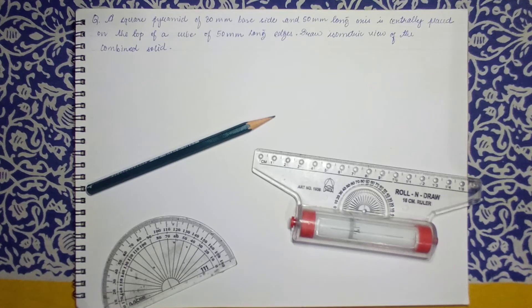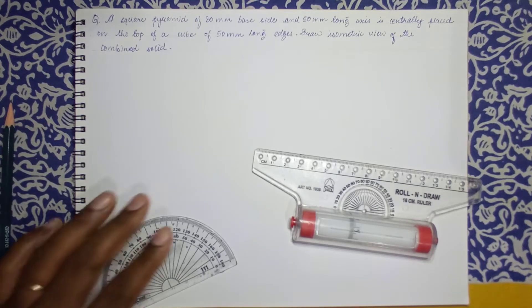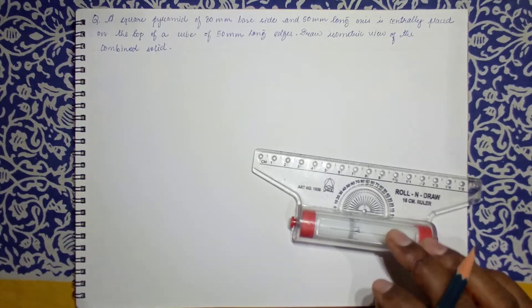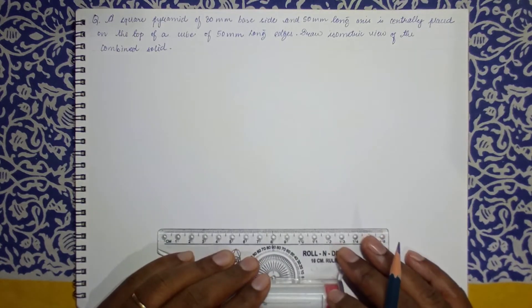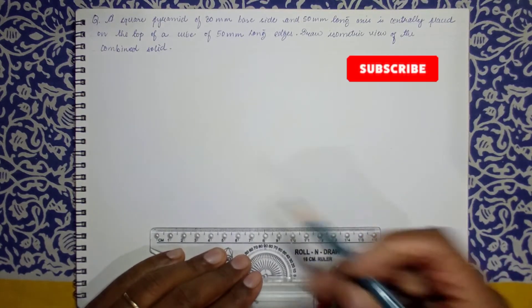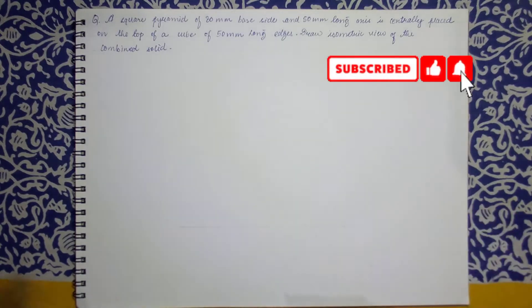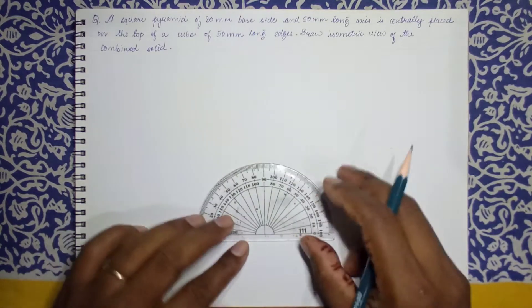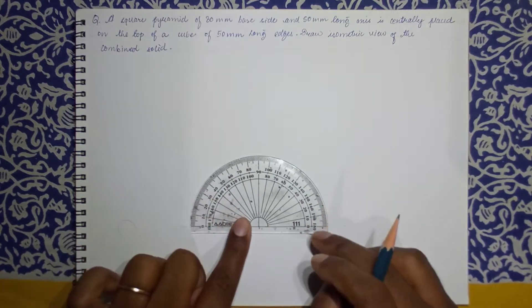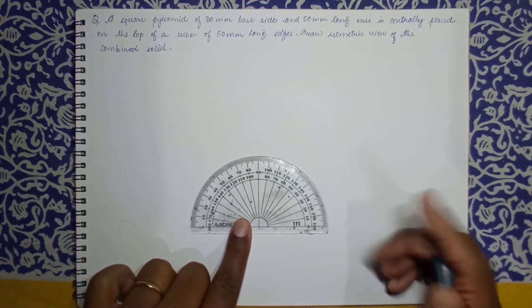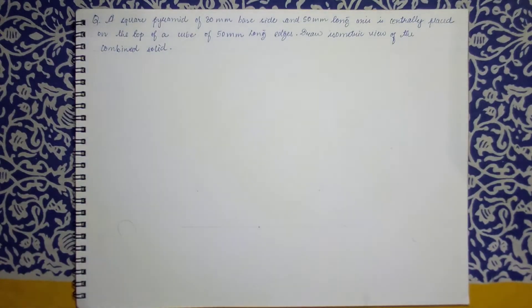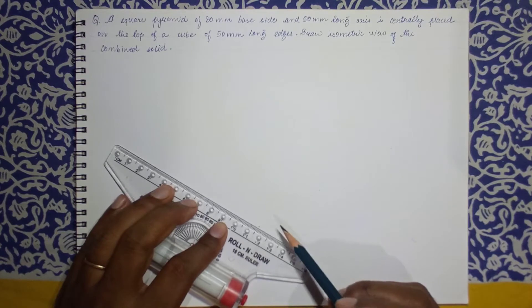Let us see how we proceed for the problem. Very first, initially we draw a line and we draw the isometric axis which will be at position of 30 degrees. Initially I will draw a line, take a point at comfortable distance, let this be construction line, and then we can make it dark. Placing the protractor at this position we mark a point at 30 degrees on either side.